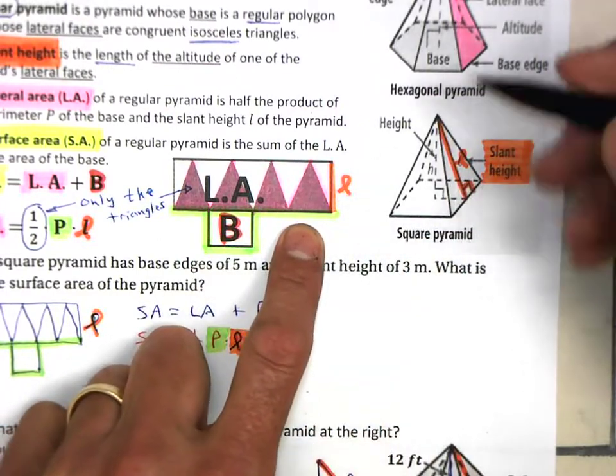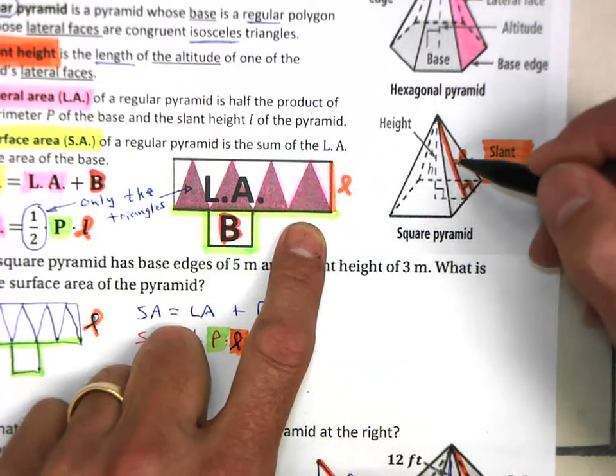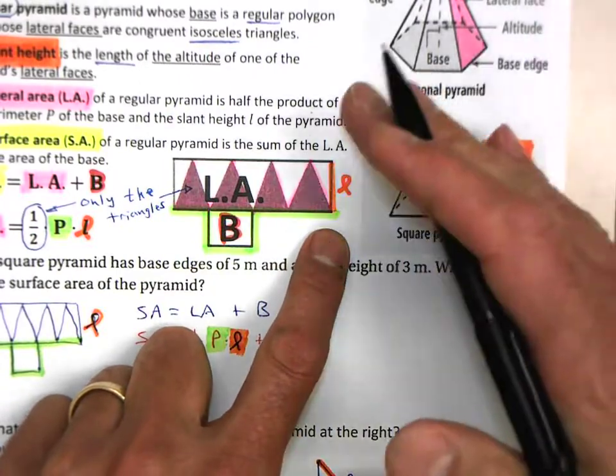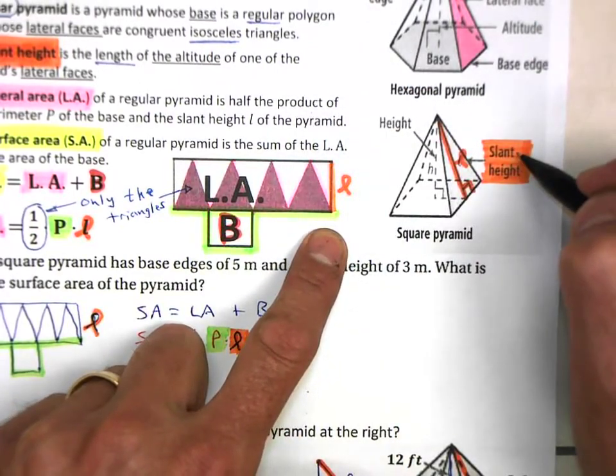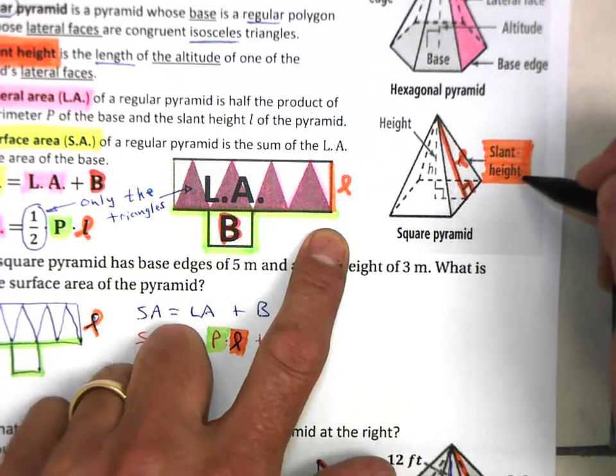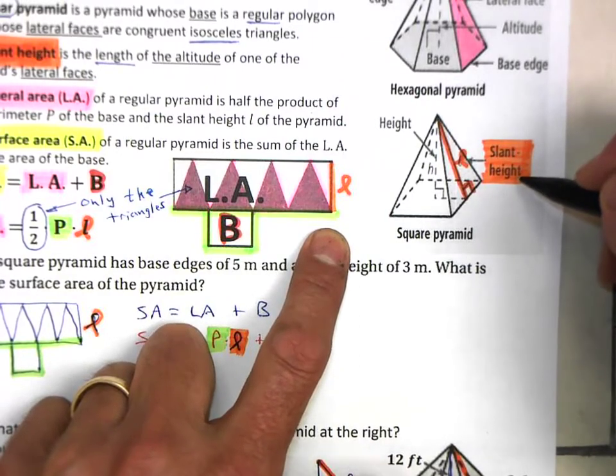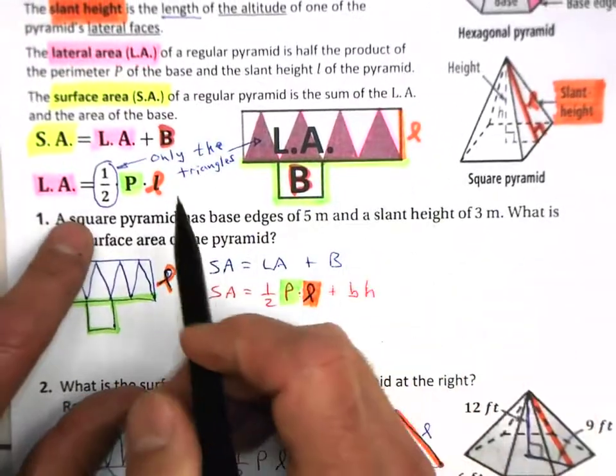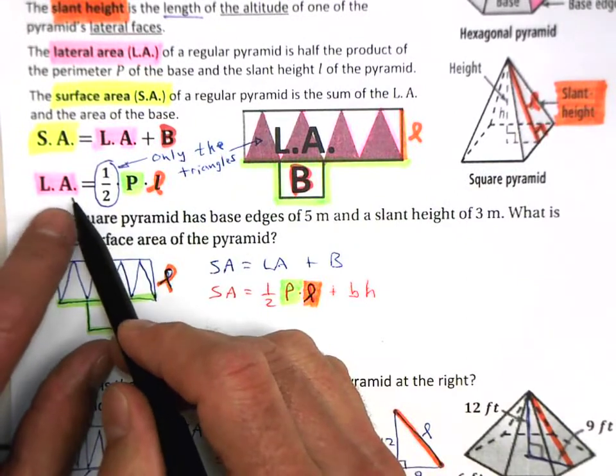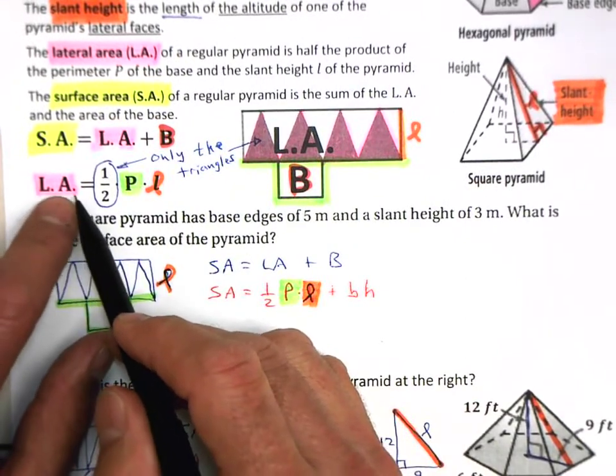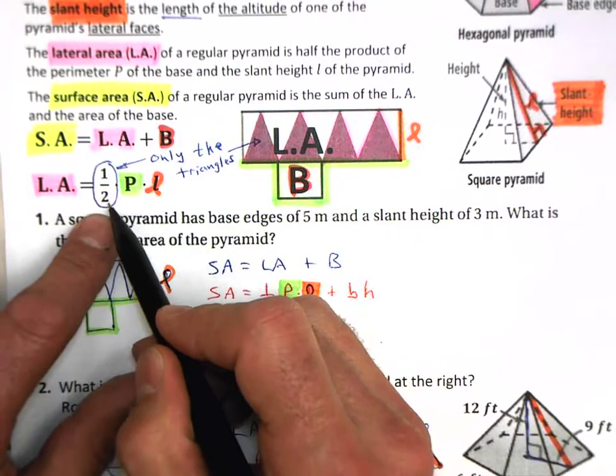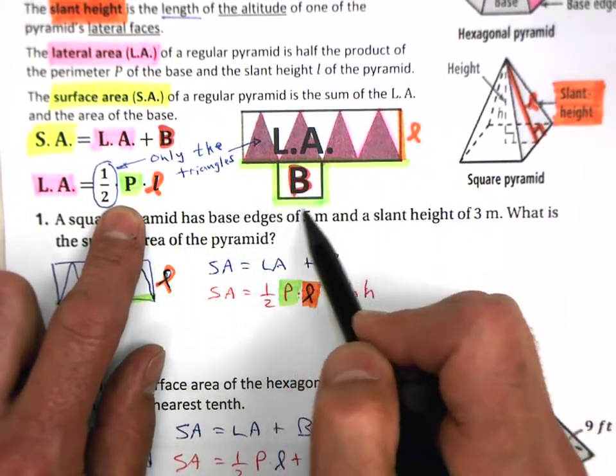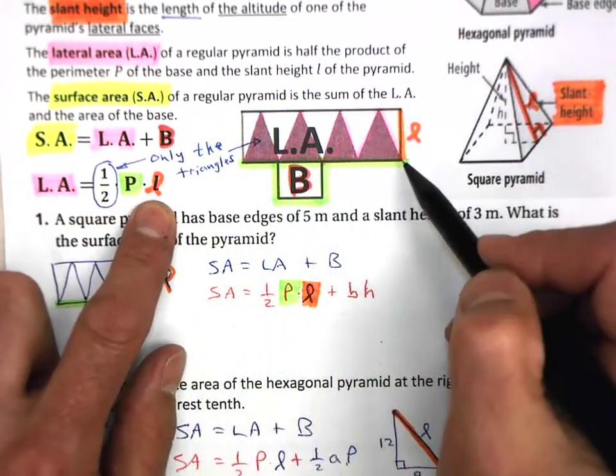We call it a slant height because at a pyramid, it's kind of slanted in. So that's probably the best adjective we can think of for defining this particular height. So therefore, the equation for the lateral area is one half the perimeter around the big base times the slant height.